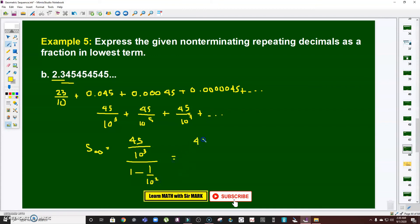So that is 45 over 10 cubed over 10 squared minus 1, which is 99 over 10 squared. See that? Now we can further simplify this.